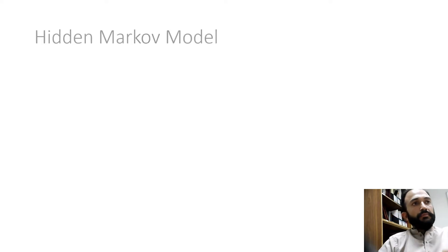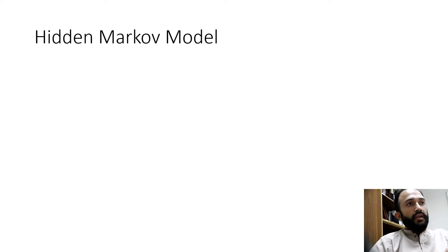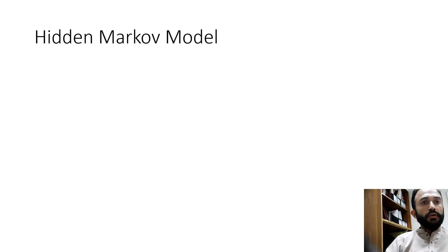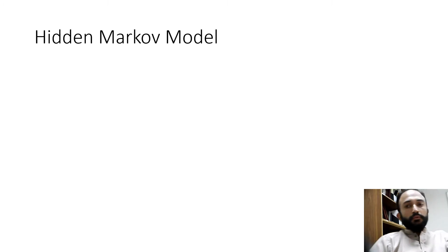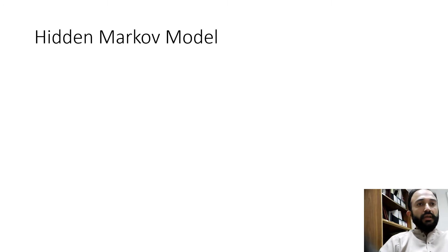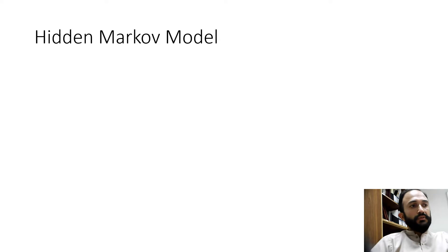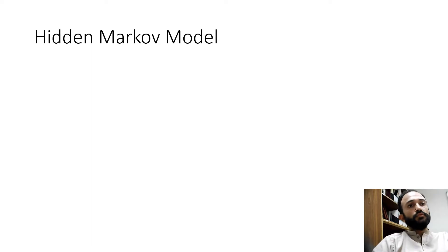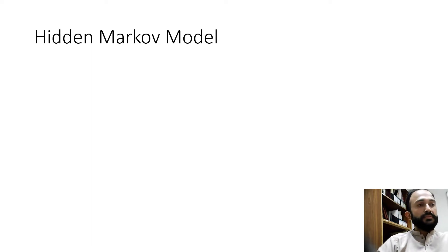Let's talk about the basic features and terminologies in the Hidden Markov Model. There are different states, and each state has an observation. From that state, the model moves to another state. These are different terms that we will see one by one. The Hidden Markov Model moves from one state to another.